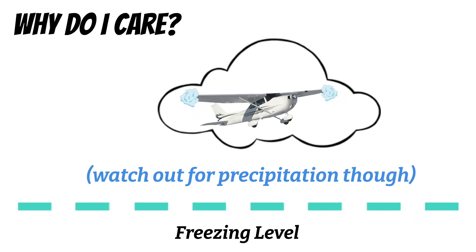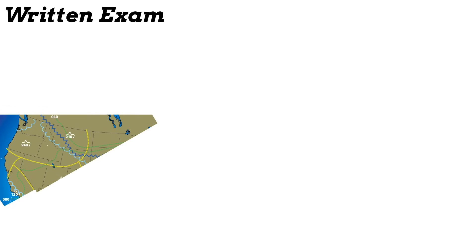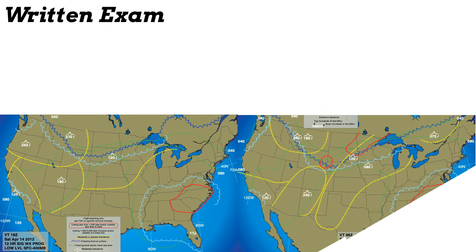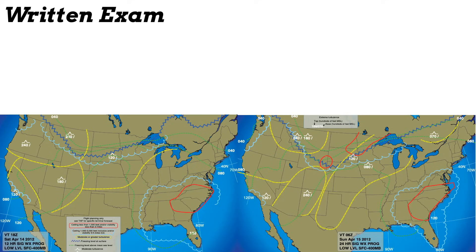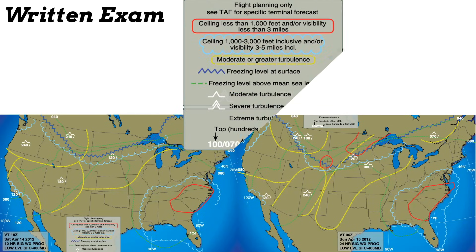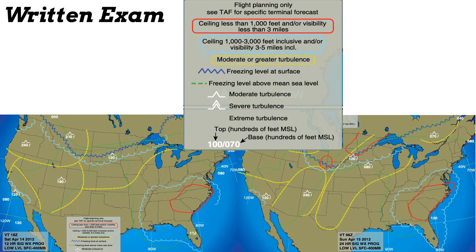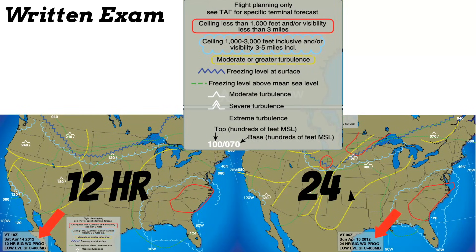On the written exam, you'll likely get asked a couple of questions about prog charts. The charts on the test look a little different from the real ones and the colors are slightly off, but it should still be fairly simple because they give you a legend. The big thing to remember is to pay attention to the question and make sure you choose the appropriate chart — because remember, you have a 12-hour forecast and a 24-hour forecast.